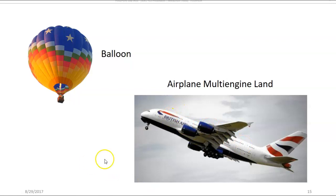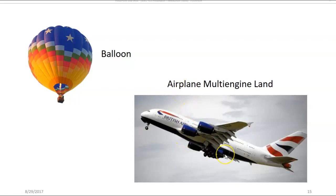On the right side is an air transport aircraft. Even though it is a very large aircraft, it is still known as airplane multi-engine land because it has more than one engine, is designed to land on the ground, and is an airplane. Remember that this applies to airman certification, not aircraft certification. If we were talking about aircraft certification, this aircraft would be a transport category aircraft and the class would be airplane.